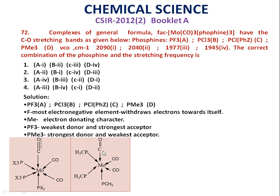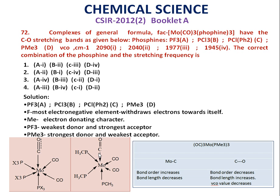As a result, the molybdenum-carbon bond becomes very strong and the CO bond becomes very weak. In the case of ligands A, B, and C, these are the weakest donors, so the metal atom experiences very little electron density and is less able to donate electrons to the antibonding orbital of CO. For tricarbonyl-trimethylphosphine-molybdenum, the Mo-C bond order increases while the CO bond order decreases, so the CO stretching frequency decreases.